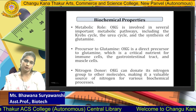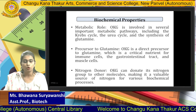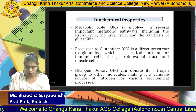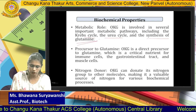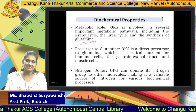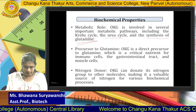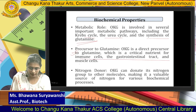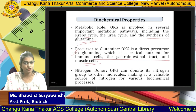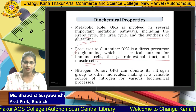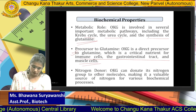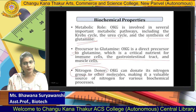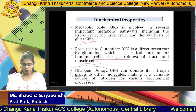The biochemical properties begin with the metabolic role. OKG is involved in several metabolic pathways including the Krebs cycle, the urea cycle, and the synthesis of glutamate. It is basically involved in anabolic pathways. OKG is also a precursor of glutamine, a critical nutrient for immune cells, the gastrointestinal tract, and muscle cells. Additionally, OKG functions as a nitrogen donor — it can donate nitrogen groups to other molecules, making it a valuable source of nitrogen in various biochemical processes.